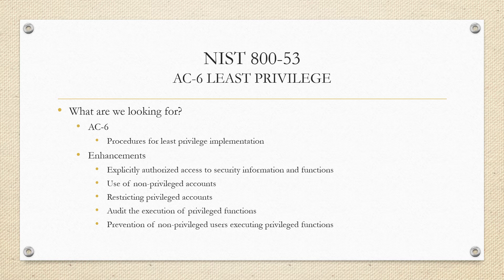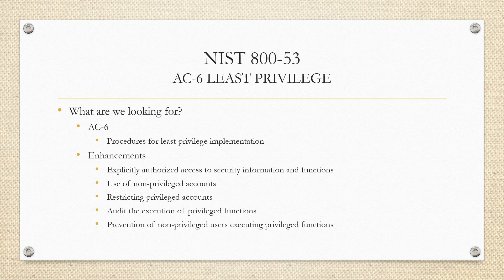For Enhancement 1, we're looking for several things. First, defined information for which access must be authorized — that security-relevant information can include firewall rules, filtering rules, router configurations, key management system information, baseline configuration parameters, and your access control list. We're also looking for defined security functions deployed within hardware, software, and firmware — that could include system accounts, how you configure access authorization, privileges and permissions, the events you audit, or intrusion detection parameter settings.